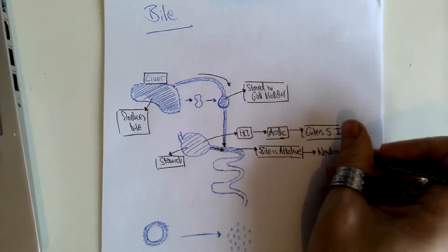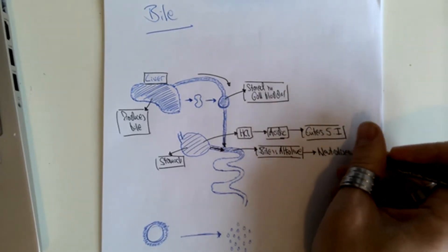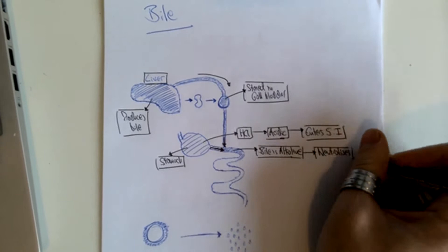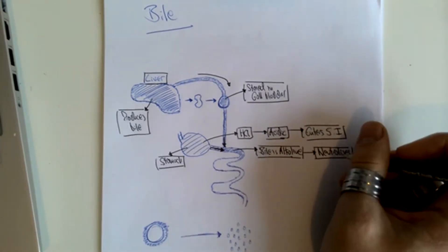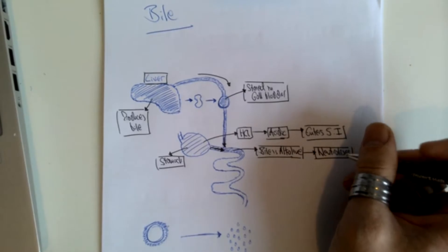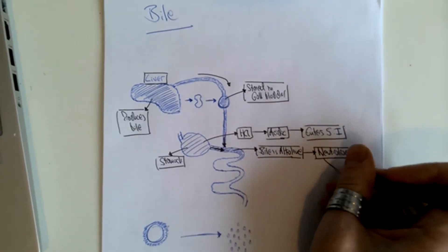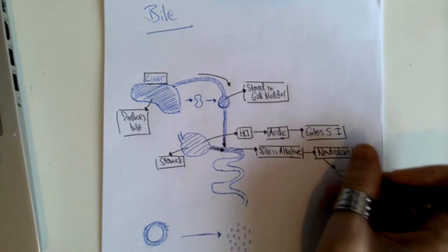This means that the hydrochloric acid won't have any damaging effect on all the organs within the digestive system as it moves through. And it also means that enzymes in small intestine can work at their optimum pH.